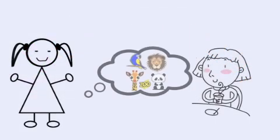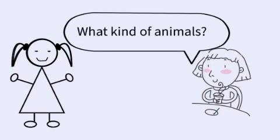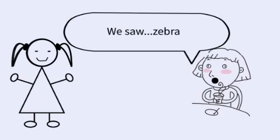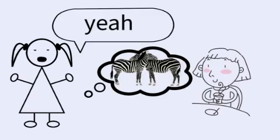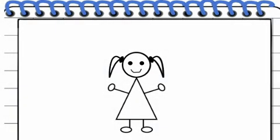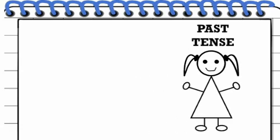What do we see at the zoo? Animals. What kind of animals? We feed. We saw zebra.